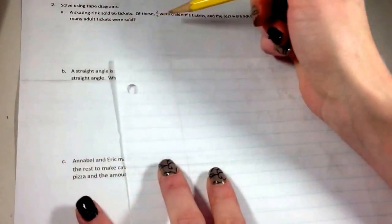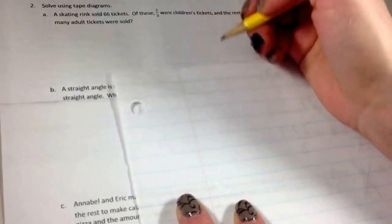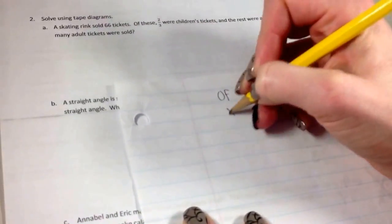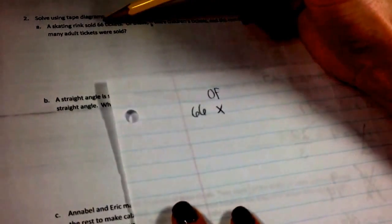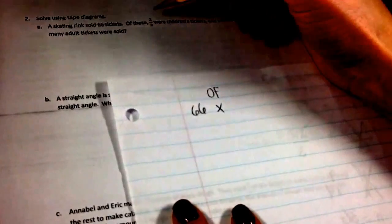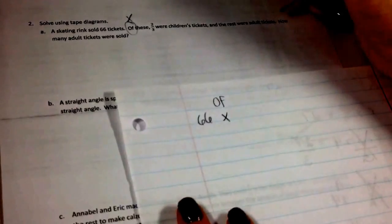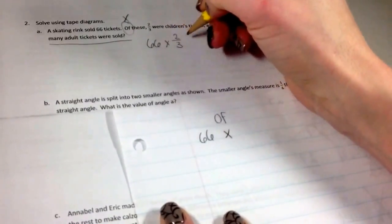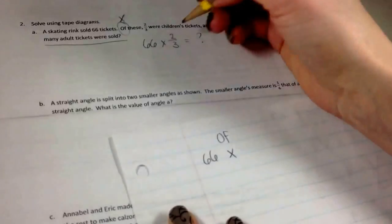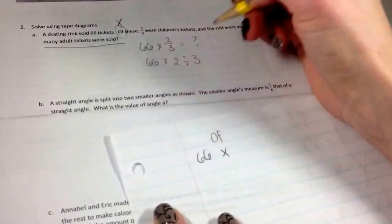Solve using a tape diagram. So a skating rink sold 66 tickets. Of these, so you see the word of. Of means multiply. So 66. Usually of means multiply. Skating rink sold 66 tickets. Of these, two-thirds were children's tickets and the rest were adult tickets. How many adult tickets were sold? So you have 66 of two-thirds. And you don't know.